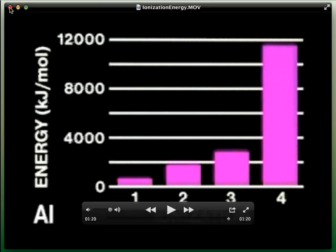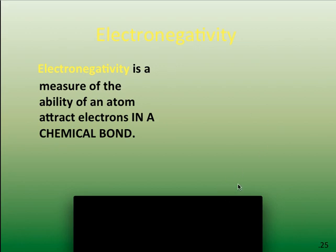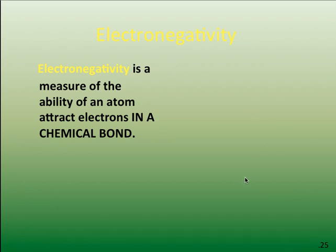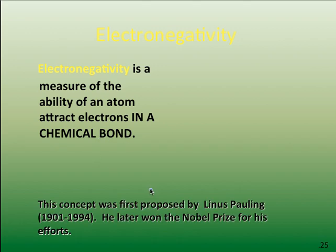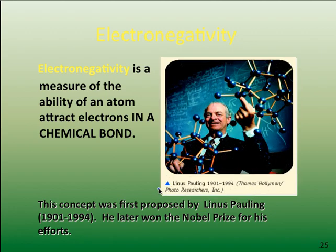Moving on to the next trend: electronegativity. Remember the definition — electronegativity is the measure of an atom's ability to attract electrons in a chemical bond. It was first proposed by Linus Pauling, 1901 to 1994, who later won a Nobel Prize for his efforts.